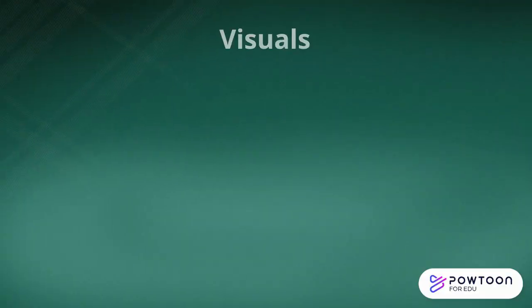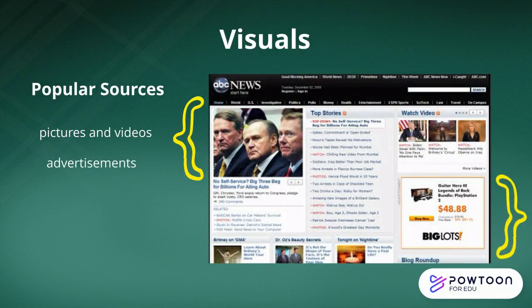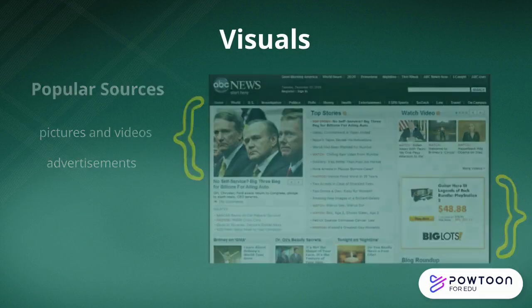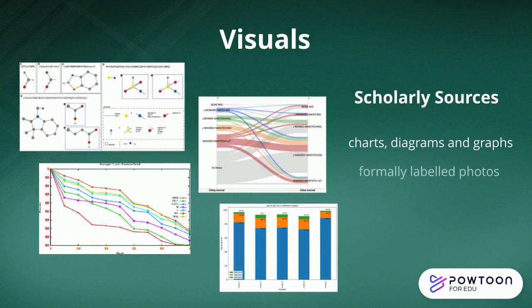Popular and scholarly sources also use different visual aids. Popular sources often contain graphics like colorful photographs and videos, and they also often include advertisements. Scholarly sources won't have ads. They use charts, diagrams, graphs, and formally labeled photographs.